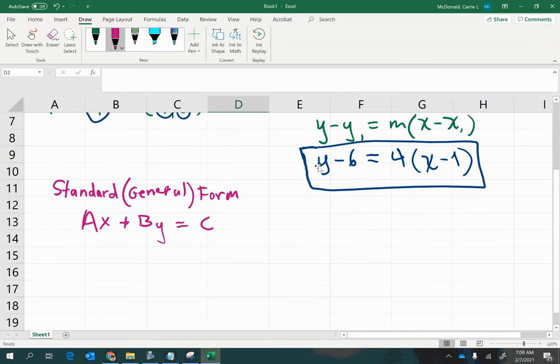So to get the equation of the line to look like that, we'll take what we have so far, and we'll just simplify it with y minus 6 equals 4. I'm going to go ahead and distribute here, 4x minus 4.